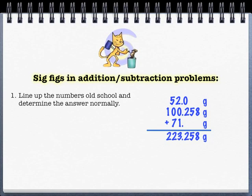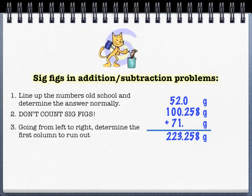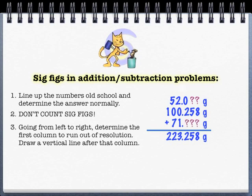If we line these three numbers up, a lot of you would simply add those up and say 223.258, and not even bat an eye. But take a look at what's going on here.